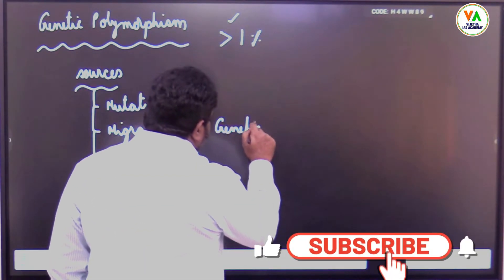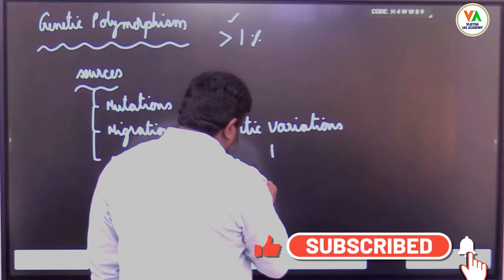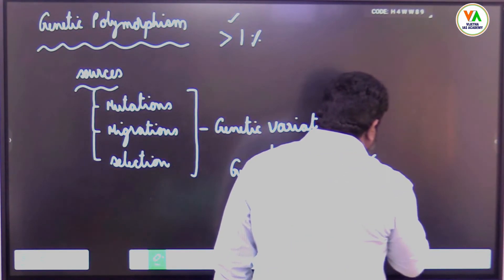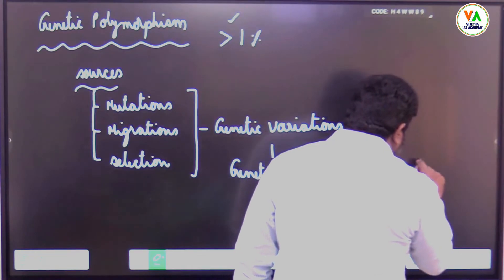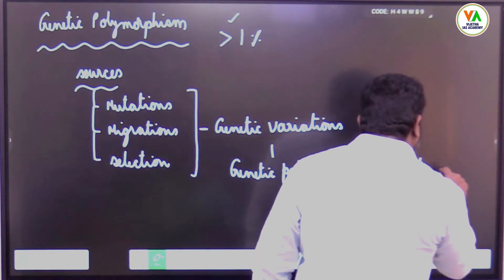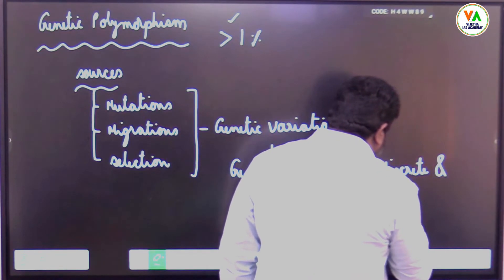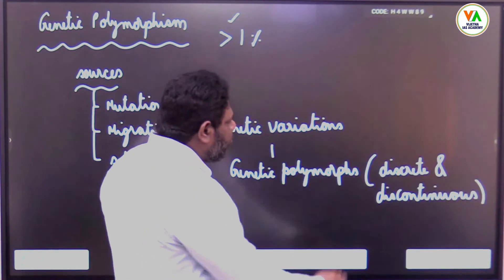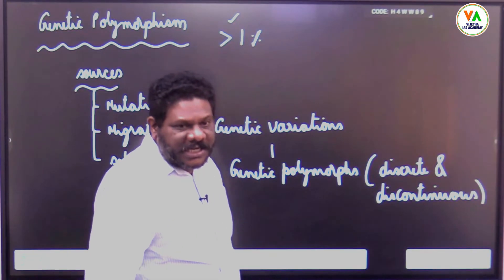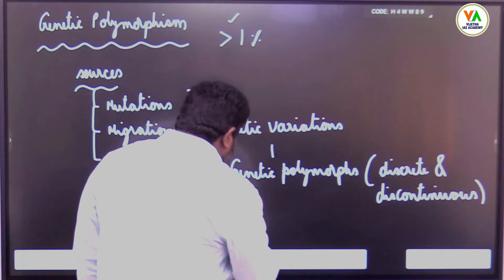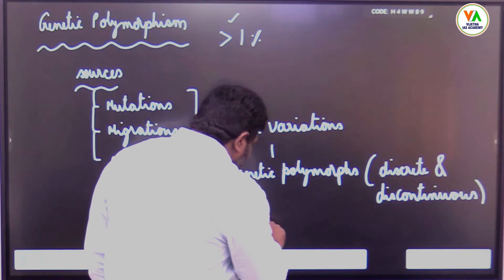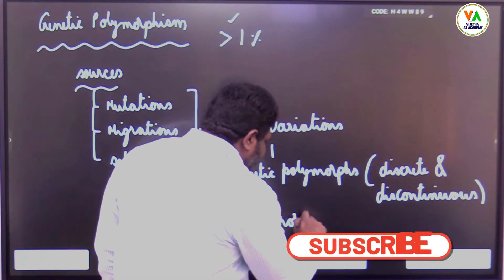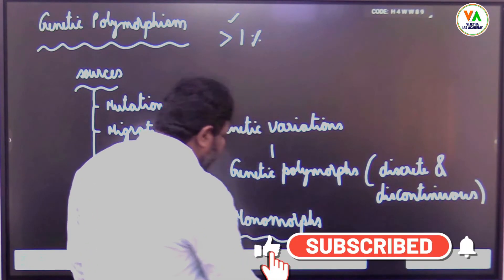Due to these sources, genetic variations resulting in genetic polymorphs are formed. Polymorphs are discrete and discontinuous characters. Monomorphs, on the other hand, lack discrete and discontinuous characters.